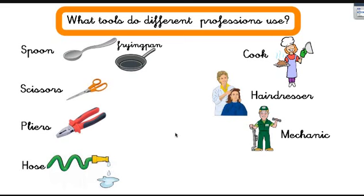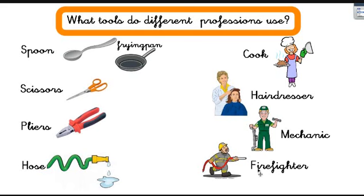And what is this last tool? This is a hose. A hose is used by many people in their profession. I have in mind the gardener — yes, a gardener. And another very important person when there are fires: the firefighter. Look at this picture — he's the firefighter with a hose, putting out fires with water. Excellent.